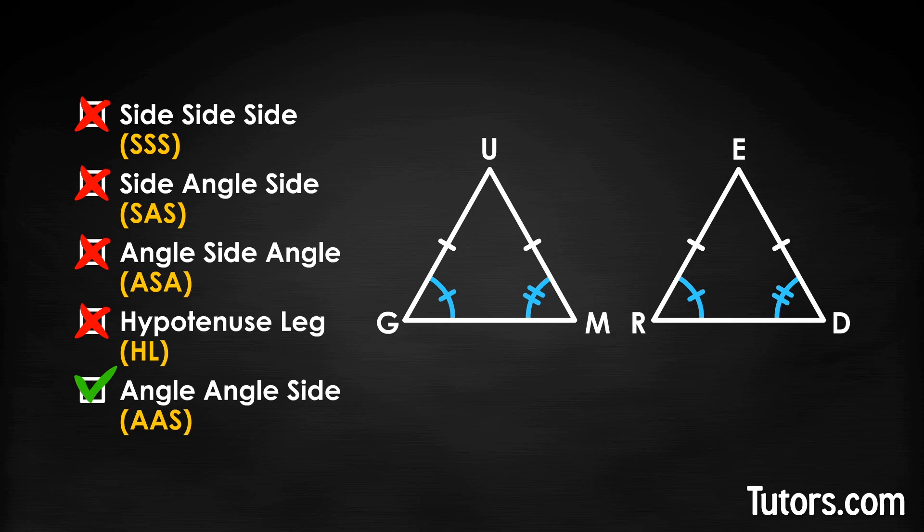Why does the AAS theorem work? Angle-angle-side theorem works because all the interior angles of all triangles add up to 180 degrees. So, if you know two angles of a triangle, then you know how to find the third angle of a triangle.